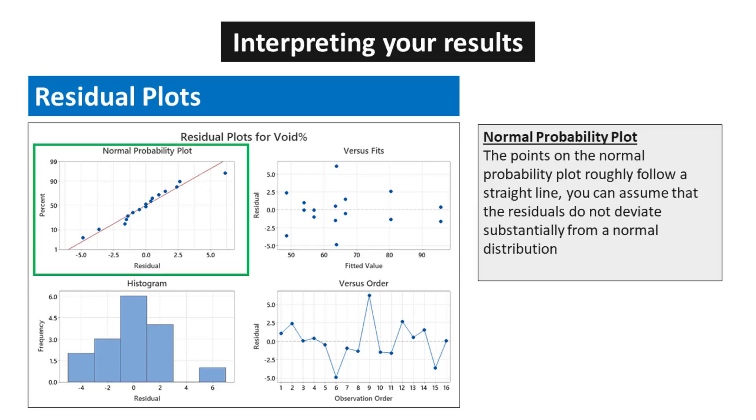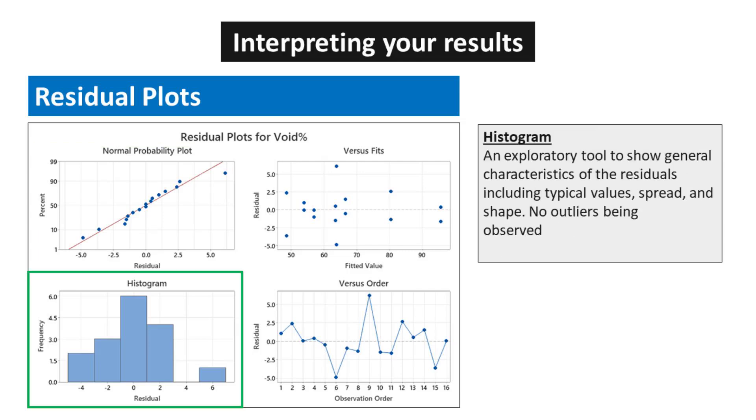For the normal probability plot, if the points on the normal probability plot roughly follow a straight line, you can assume that the residuals do not deviate substantially from a normal distribution.